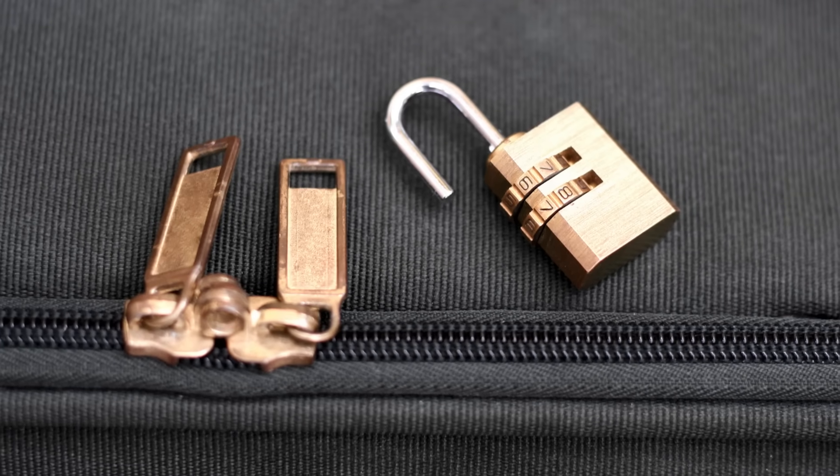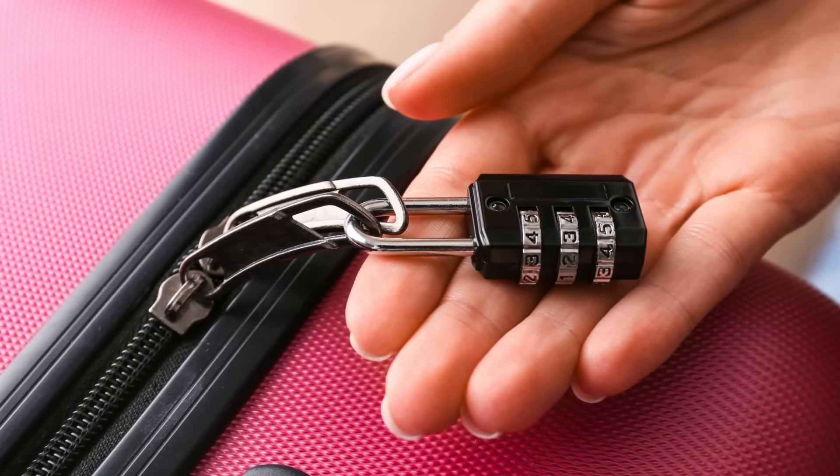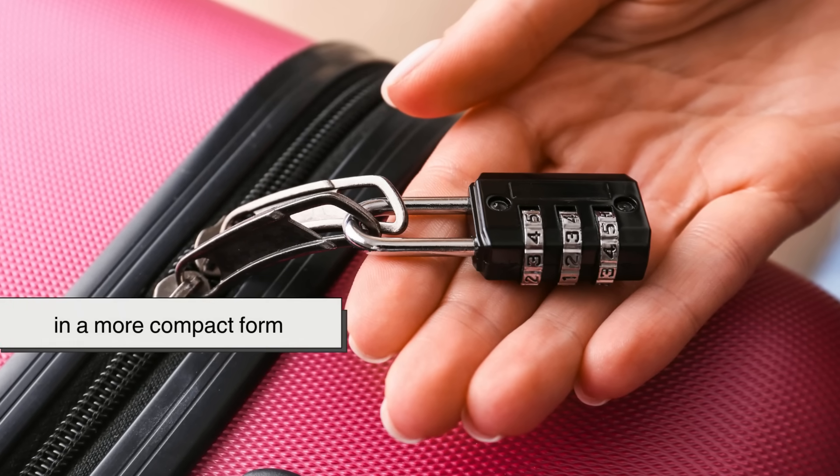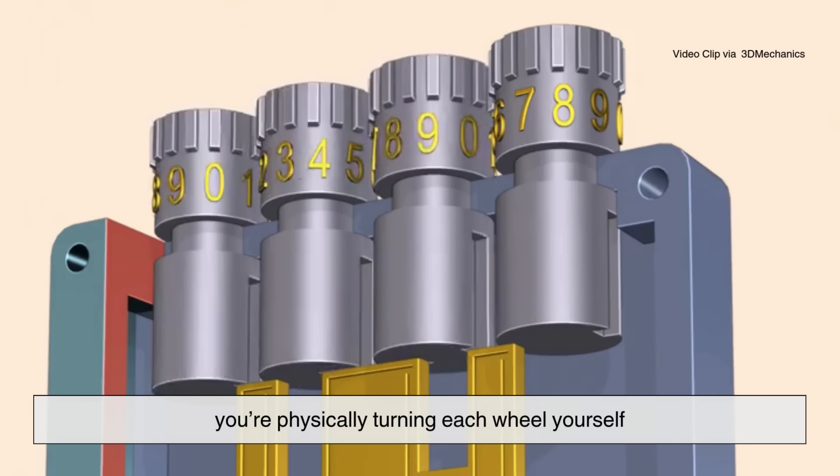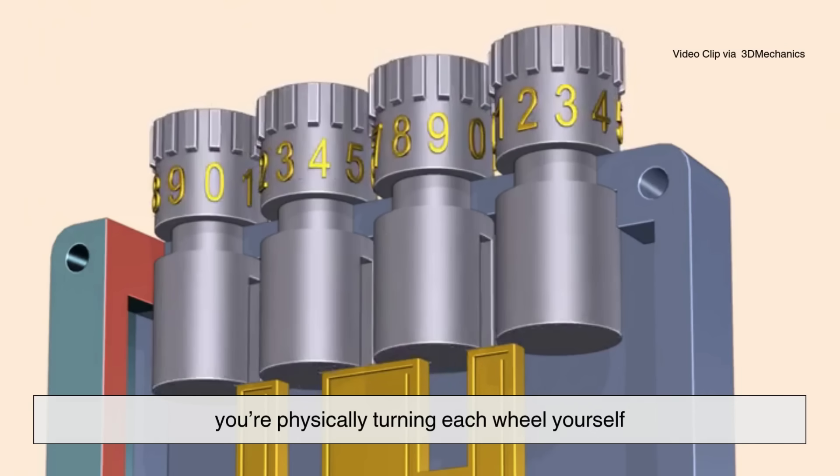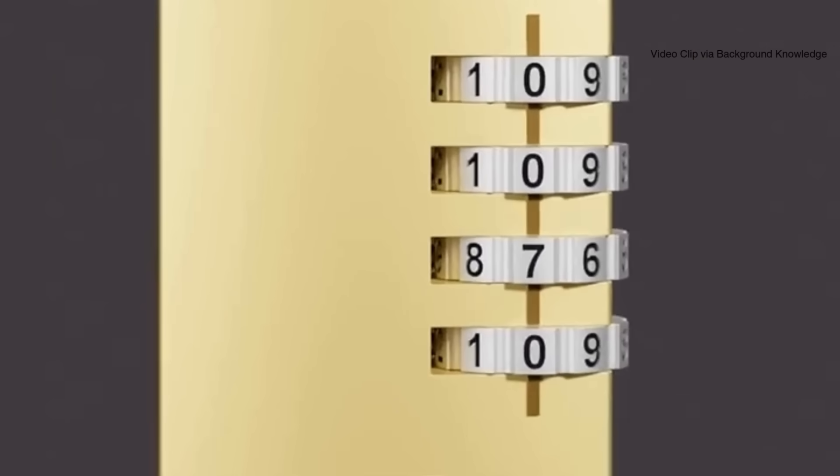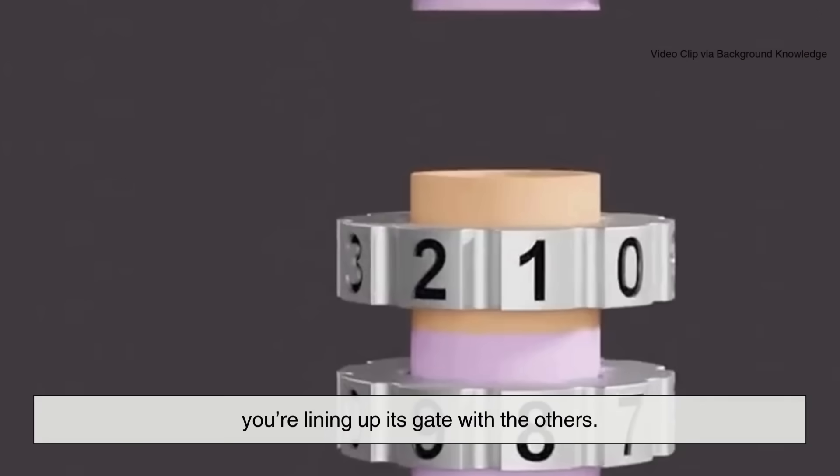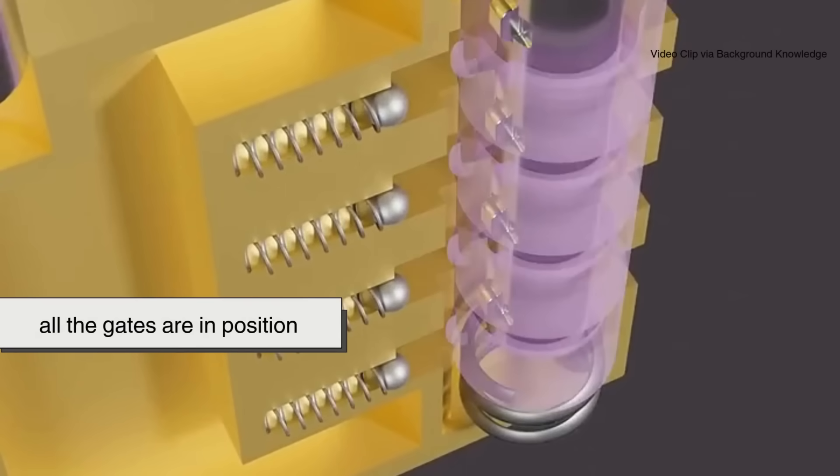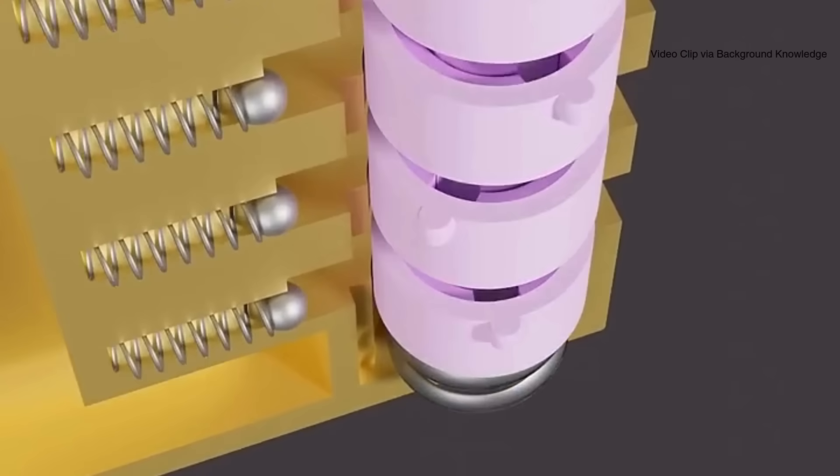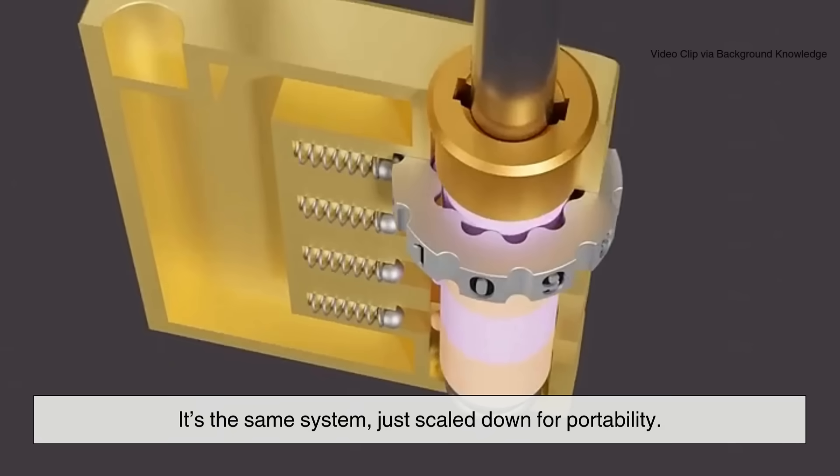In a smaller rotating wheel lock, like the ones you use on luggage, the same principle applies, but in a more compact form. Instead of one dial controlling multiple wheels, you're physically turning each wheel yourself. Each digit is etched onto its own wheel, and when you spin it to the right spot, you're lining up its gate with the others. When every digit is correct, all the gates are in position, and the locking bar is free to move. It's the same system, just scaled down for portability.